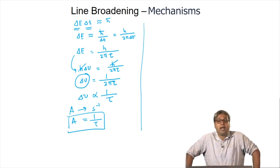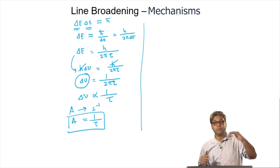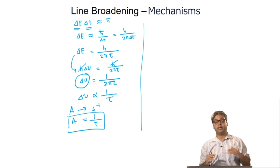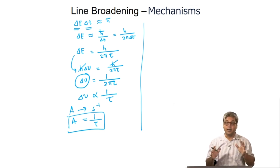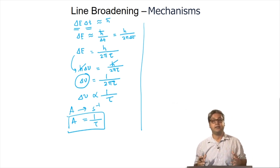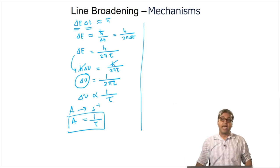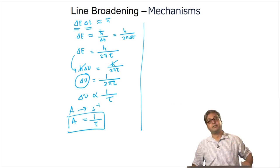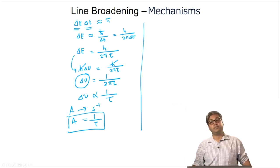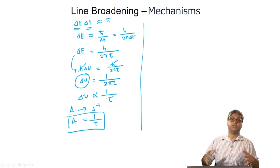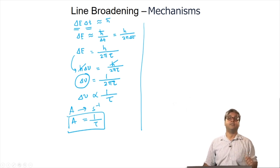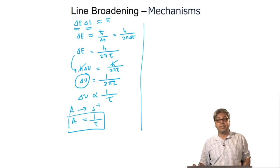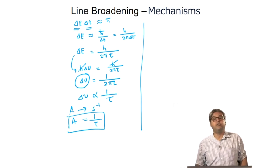Delta nu is the uncertainty in frequency, giving rise to broadening of the spectrum along the frequency axis. The spectral broadening delta nu is inversely proportional to the lifetime — if the lifetime is short, the spectrum is broad, and vice versa. Einstein's coefficient for spontaneous emission A has units of second inverse, and it can be shown that A equals 1 by tau. Lifetime can also be affected by collisions between the quantum state and surrounding particles. In the condensed phase, collisions are more frequent than in the gas phase, and since they are inelastic, they reduce the lifetime. Increasing pressure increases collisions and thus reduces lifetime. In all these cases, the spectral line shape is Lorentzian, so these factors lead to homogeneous broadening.